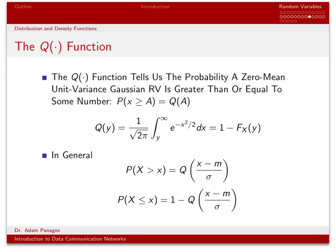There's another function we often use with Gaussian random variables: the Q function. The Q function is similar to the CDF — in fact, it equals 1 minus the CDF. The Q function tells us the probability that a 0-mean unit-variance Gaussian random variable is greater than or equal to some number. Q of A is simply the probability that the random variable is greater than or equal to A.